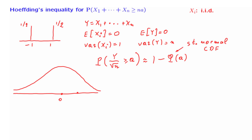This tells us that if we take the number square root of n times a, then the probability in the tail is approximately constant, no matter what n is. In particular, this tells us that values of the order of square root of n are fairly likely to occur. However, what we're interested in here is not being larger than square root of n times a — we're interested in being larger than n times a, which is further down in the tail. We have Chebyshev's inequality to address this.